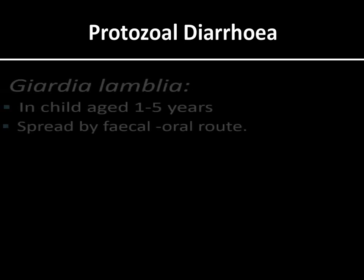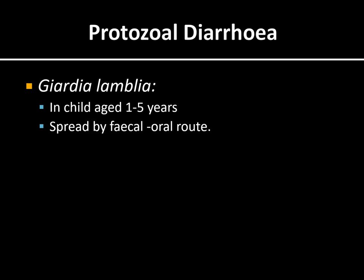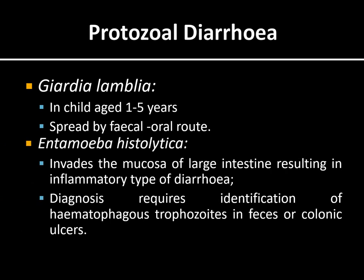Protozoa can also cause diarrhea — Giardia and Entamoeba histolytica being most common. Giardia can cause diarrhea in children aged 1 to 5 years. It is caused by ingestion of cysts through the fecal-oral route; excystation occurs in the body and trophozoites are released. Giardia can also cause chronic diarrhea and is a common cause of malnutrition if left untreated. Entamoeba histolytica invades the large intestine and can also cause chronic diarrhea, diagnosed by seeing trophozoites in the stool sample.